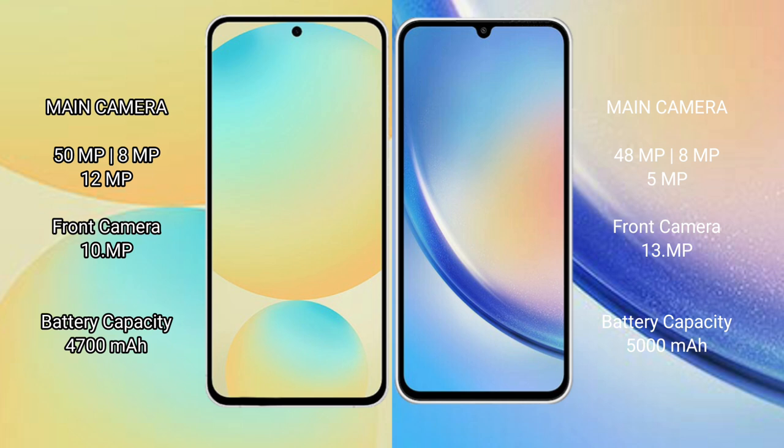The Samsung Galaxy S24 FE features a triple camera setup with 50MP, 8MP, and 12MP lenses, and a 10MP front camera. The Samsung Galaxy A34 features a triple camera setup with 48MP, 8MP, and 5MP lenses, and a 13MP front camera.